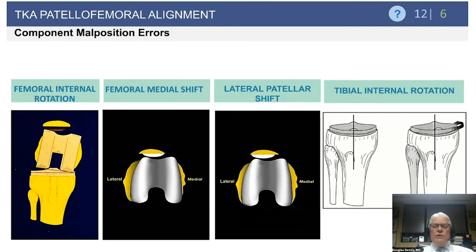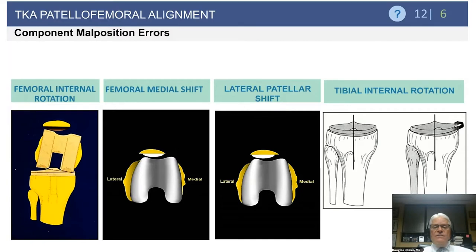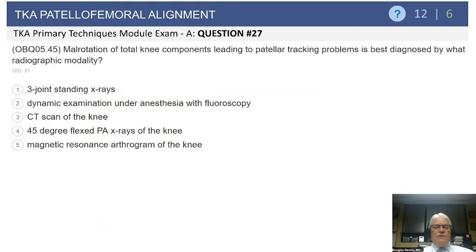If you internally rotate your tibial component, you are actually relatively lateralizing your tibial tubercle. The same thing happens if you medialize the tibial component on the tibia — you get a relative lateralization of the tibial tubercle, an increased Q angle, increased lateral force vector, and subsequent increased risk of lateral patellar tracking.